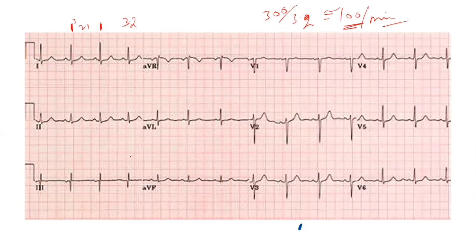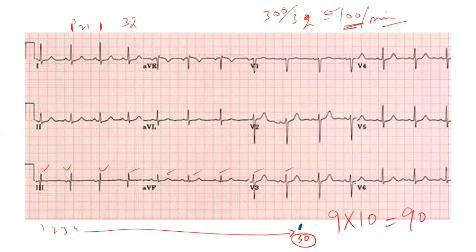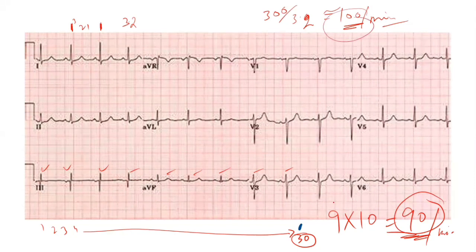For the irregular rhythm method, we look at the bottom lead and count 30 large boxes. Then we count the R waves within that strip: one, two, three, four, five, six, seven, eight, nine — approximately nine and a half. Multiplying nine by ten gives 90 beats per minute. If the rhythm were irregular, the heart rate would be approximately 90 beats per minute.